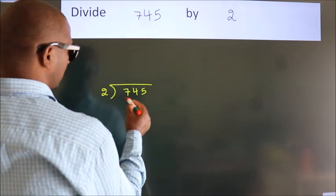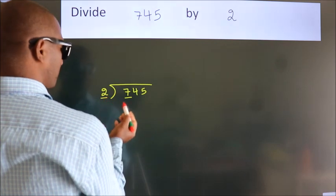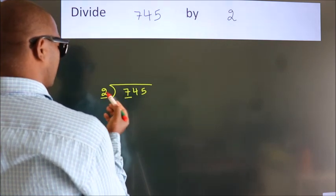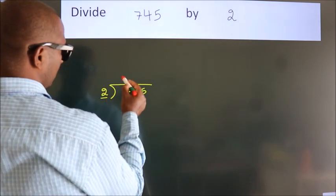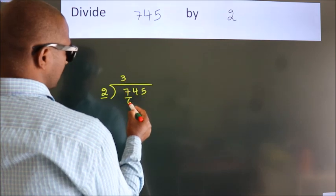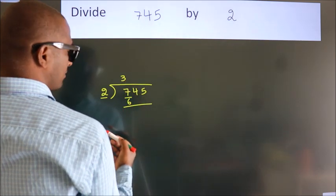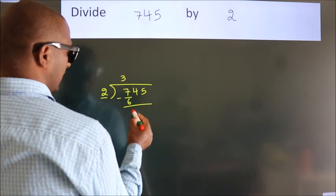Here we have 7, here 2. A number close to 7 in the 2 table is 2 threes, 6. Now we should subtract, we get 1.